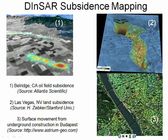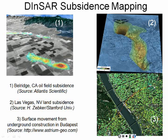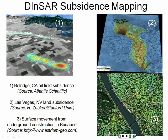You can also look at what happens in an urban area when you're doing construction. This is a recent TerraSAR-X differential SAR image showing the perturbation of the contour in Budapest as a result of underground construction. So when you put a subway in, you can determine what happens to the surface pretty precisely.